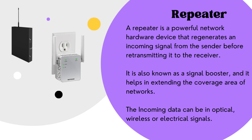A signal is attenuated in any network owing to the transmission medium, the limits of transmitting equipment, and the length of the transmission zone. This limits the coverage area of LANs and cellular networks. Repeaters are deployed at regular intervals to address the issue of attenuation — they amplify or regenerate incoming signals before retransmitting them. They operate at the OSI model's physical layer and serve as signal boosters to expand network coverage.